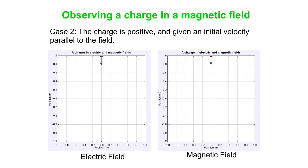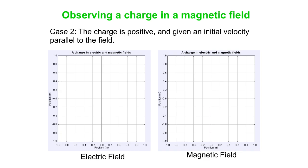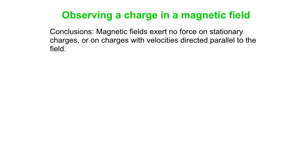Now let's compare the electric field and magnetic field again. In an electric field, if we throw the charge in with initial velocity in the direction of the field, it just gets faster — there's an acceleration in the direction of the field. In the magnetic field, we throw it in parallel to the field direction, and again there's no change; it just goes at constant velocity.